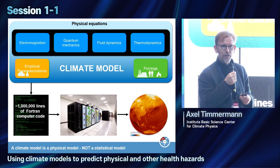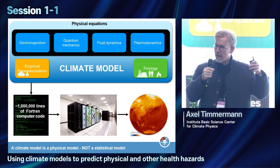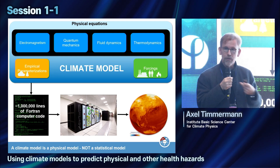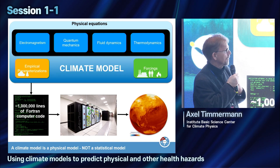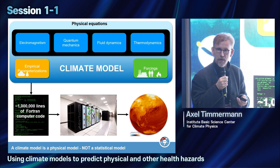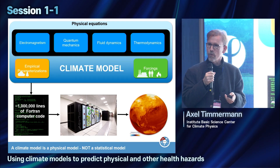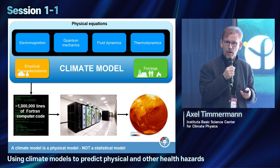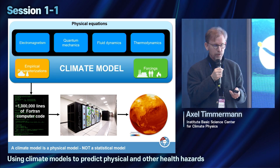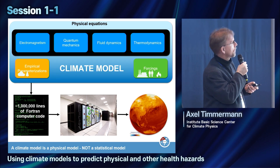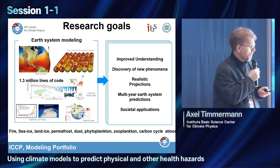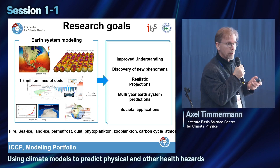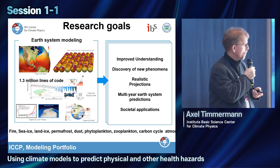We also need forcings — everything that drives the climate system from the outside. This includes our human emissions of CO2 and other greenhouse gases and aerosols. So this is a climate model in a nutshell. What can we do with these Earth system models?